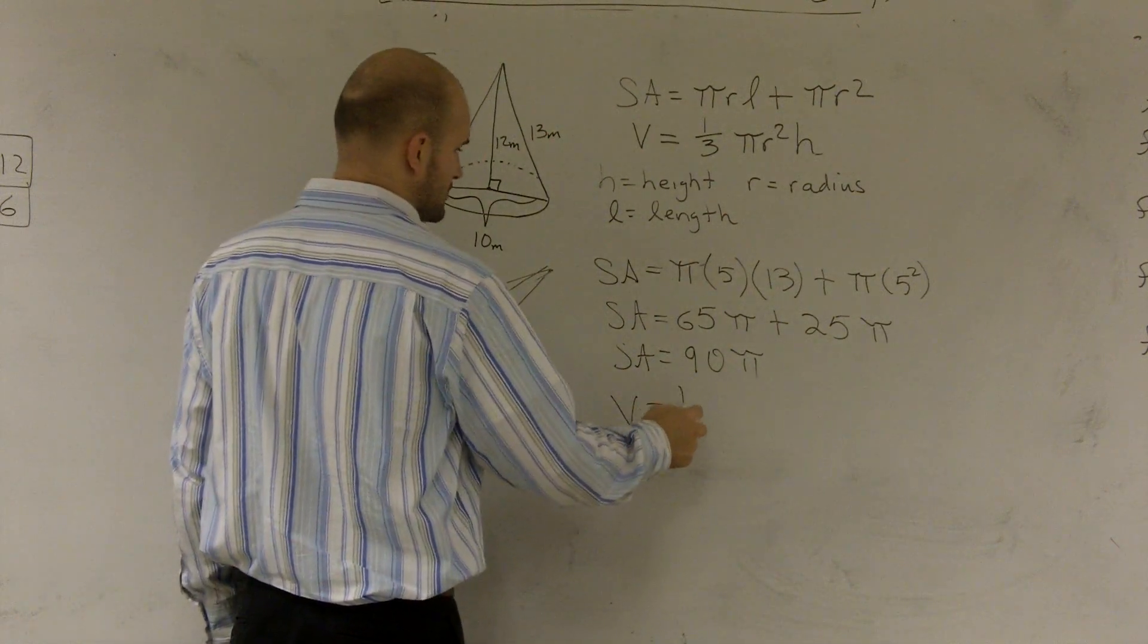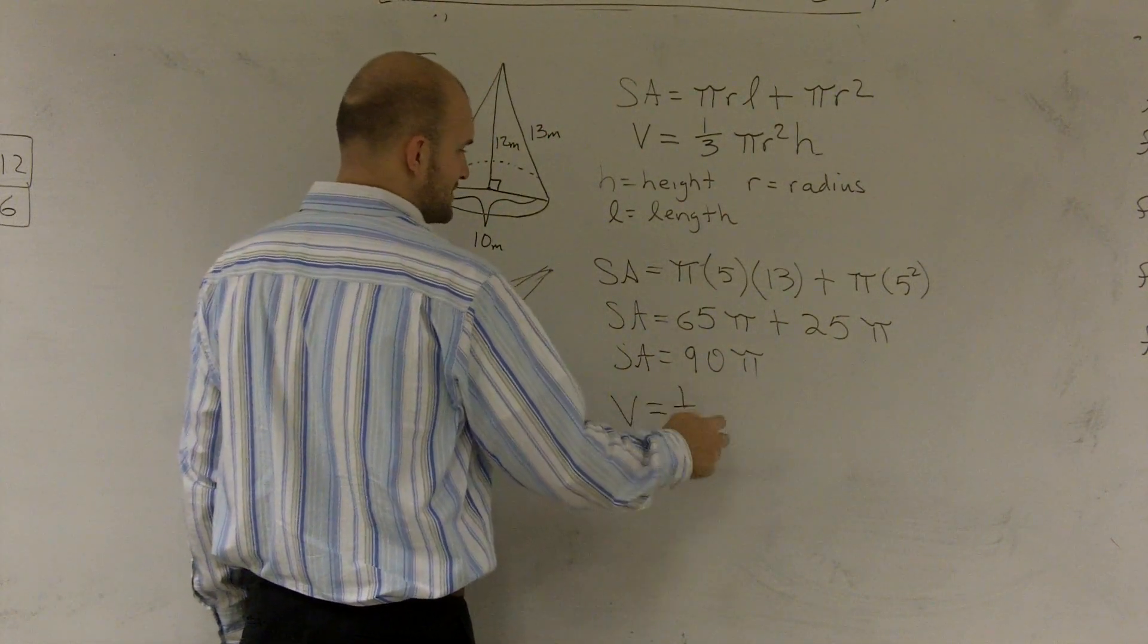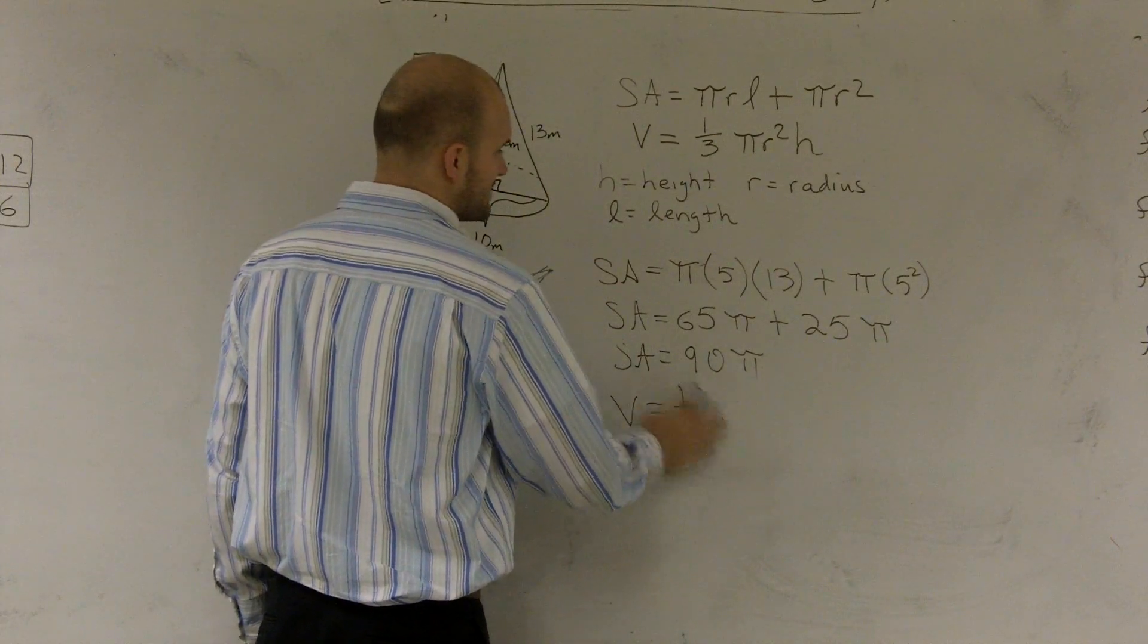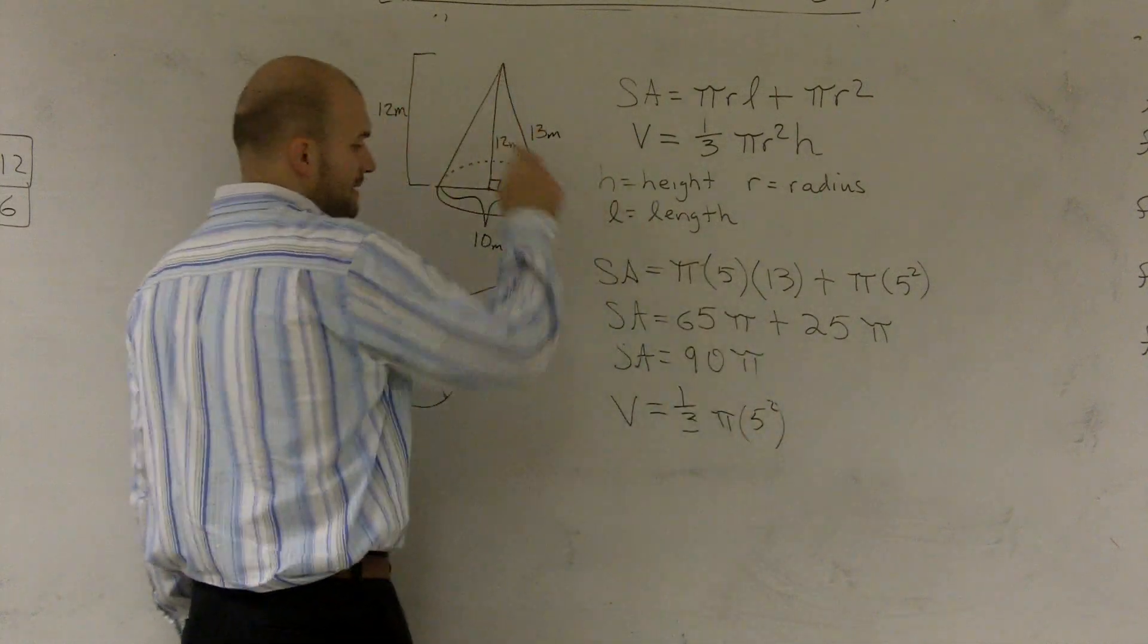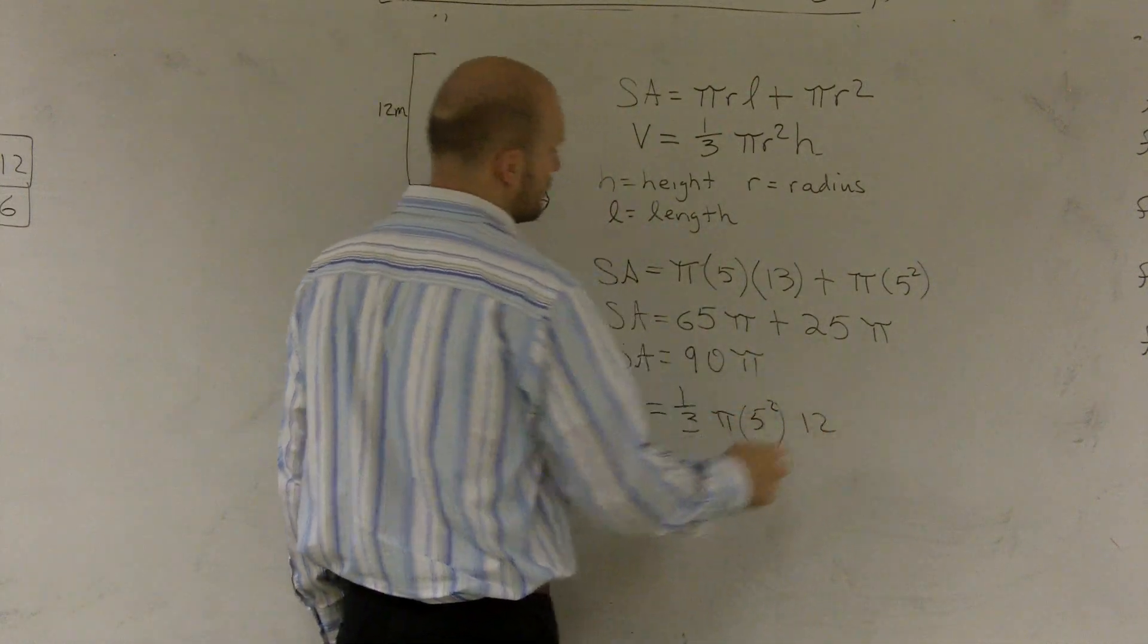Volume equals 1/3 times pi times 5 squared times my height, which is 12.